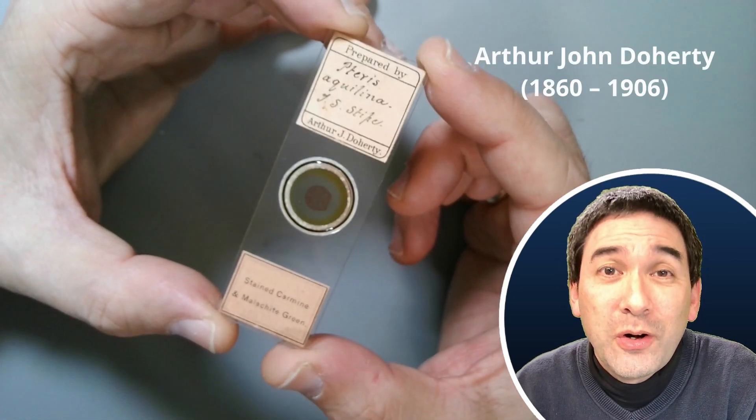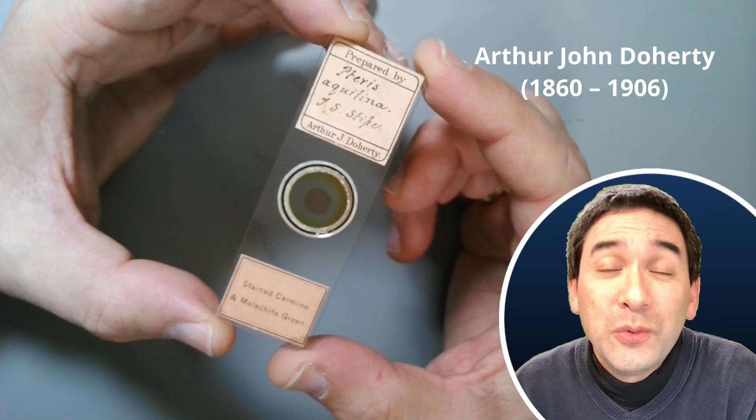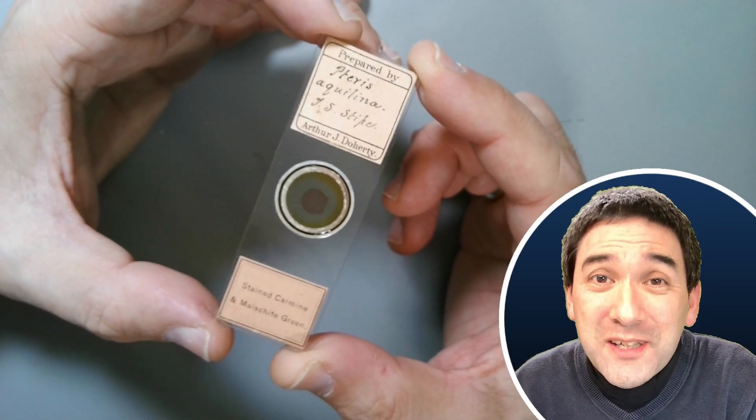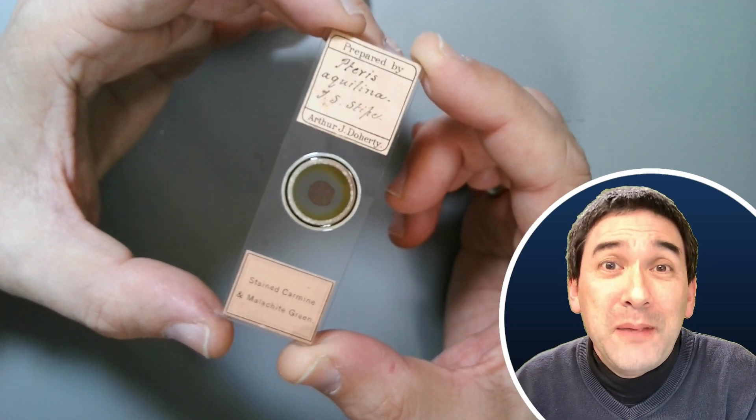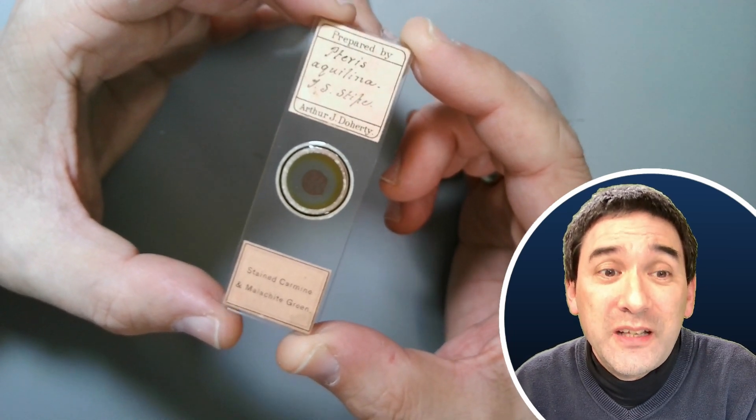The slide maker Arthur J. Doherty, he passed away in 1906. He did not get very old. He was only 46 years old, but he made quite a few slides which are still available today.